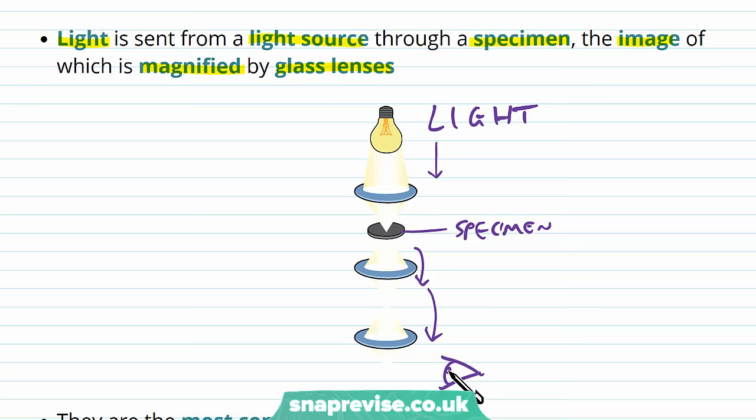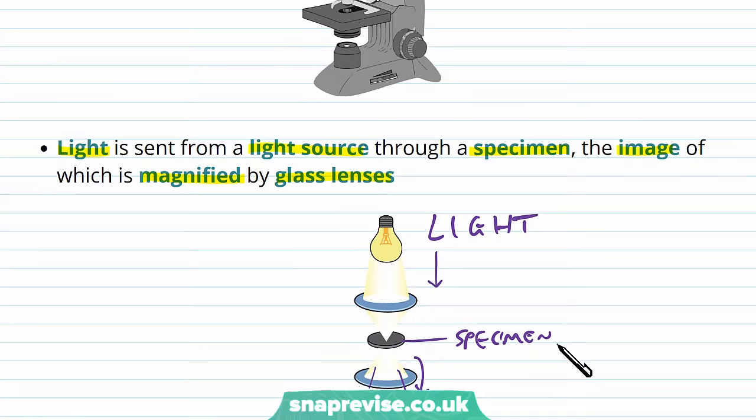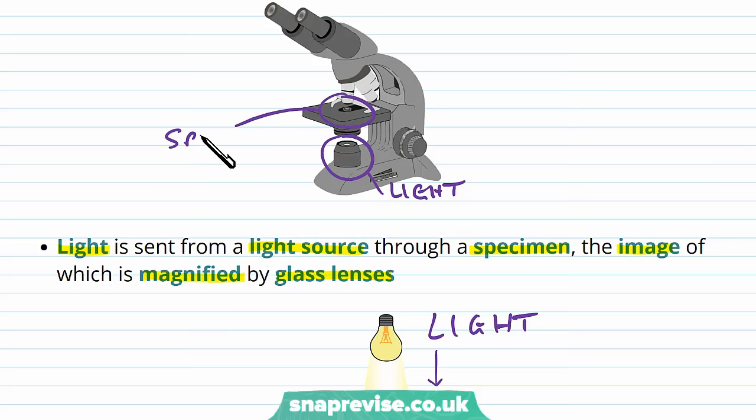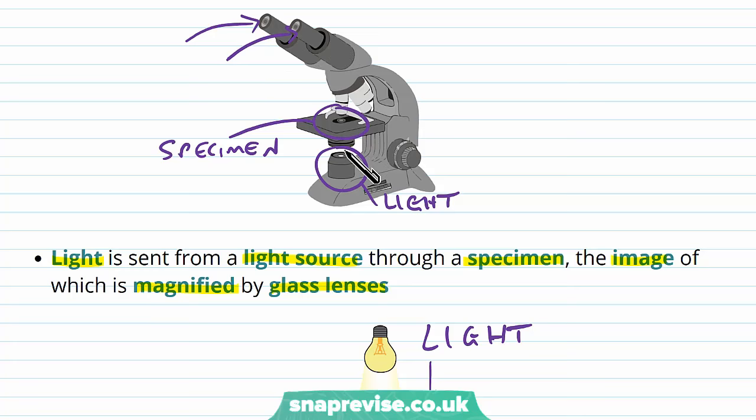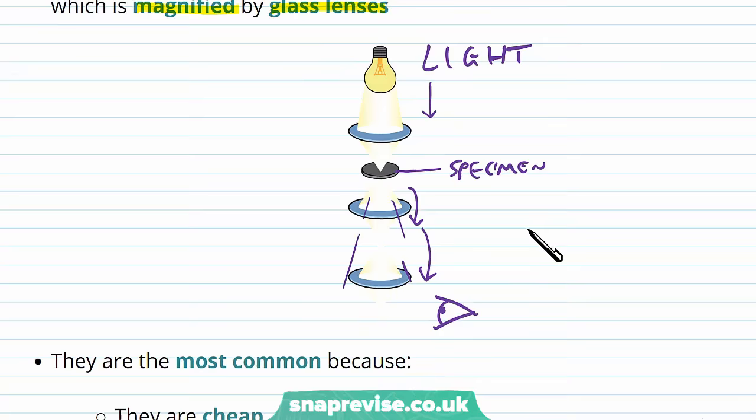So we see the specimen being bigger than it really is in real life. Usually looking on a light microscope, this will be the light source. This would be where we would place our specimen. And we look down the microscope into these eyepieces to see the light coming through. The light magnifies it into a large image for us.